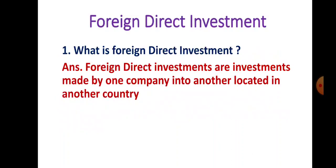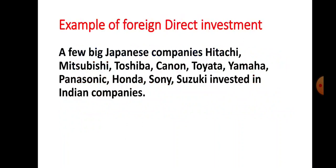Now let us see what is Foreign Direct Investment (FDI). FDI is an investment made by one company into another located in another country. For example, Japanese companies investing in Indian companies is foreign direct investment in India. A few big Japanese companies like Hitachi, Mitsubishi, Toshiba, Canon, Toyota, Yamaha, Panasonic, Honda, Sony, and Suzuki have invested in Indian companies — that is an example of FDI.